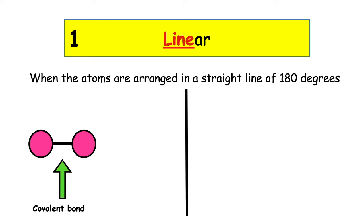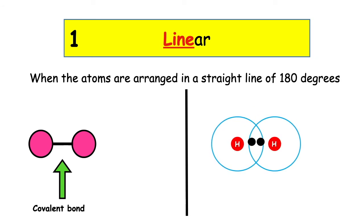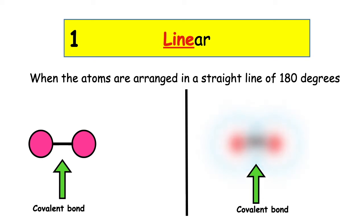The first example we're going to look at is hydrogen. Hydrogen has the electron arrangement 1, and the electron is found in the first energy level. In the first energy level, to achieve stability it needs a maximum of two electrons. Hence, it will share a pair of electrons with another hydrogen atom. In the covalent sharing diagram we have a pair of electrons representing the covalent bond. When drawing the shape of the molecule, we just draw a line between the atoms.